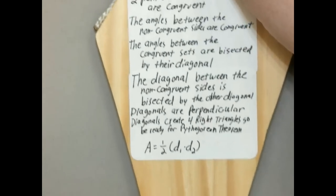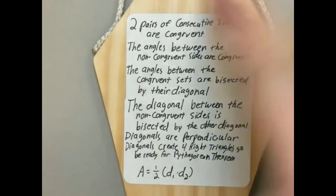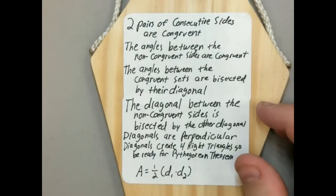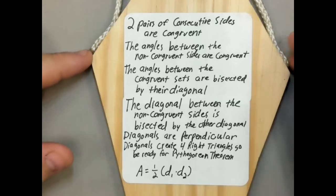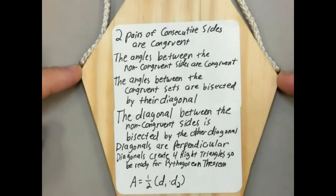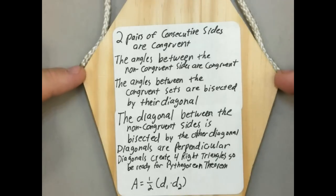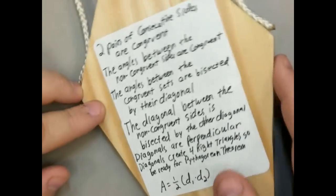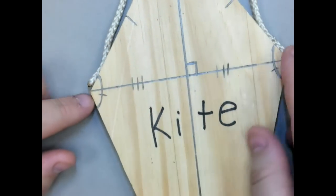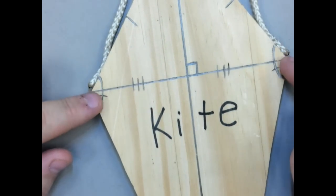Adjacent is another good word you could use because they share a vertex. You're also going to see that the two angles between the non-congruent sides are congruent. These are the angles between the non-congruent sides because this side and this side are not congruent, and this side and this side are not congruent — those are the non-congruent sides. These angles themselves are going to be congruent, as you can see in the markings on this side of the kite.